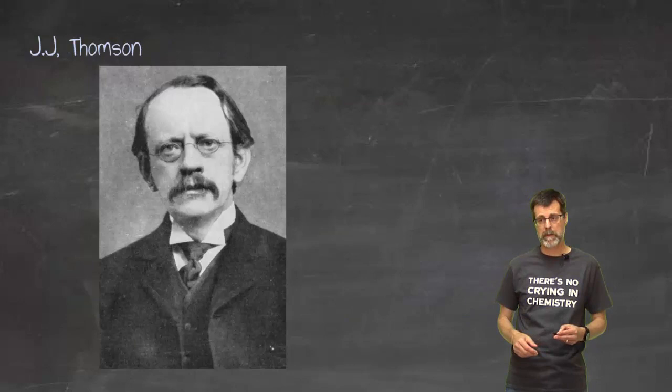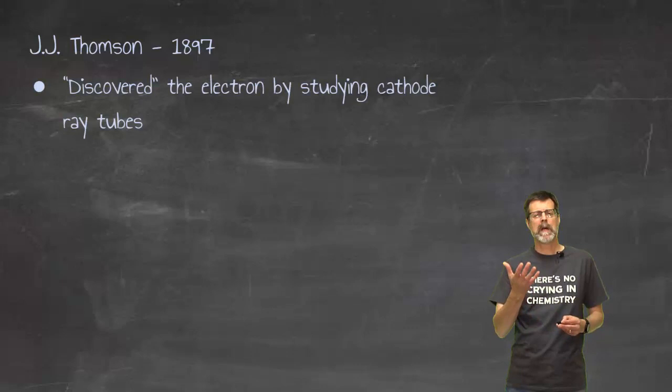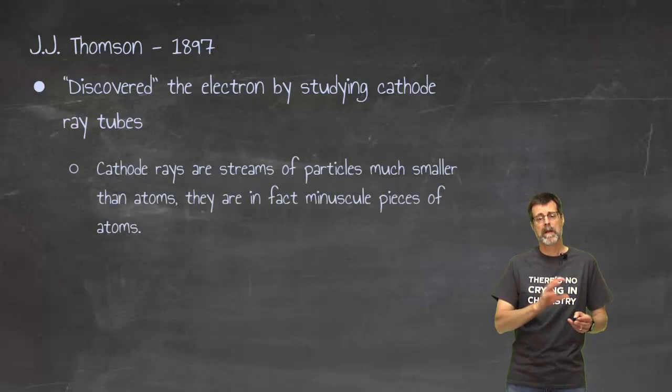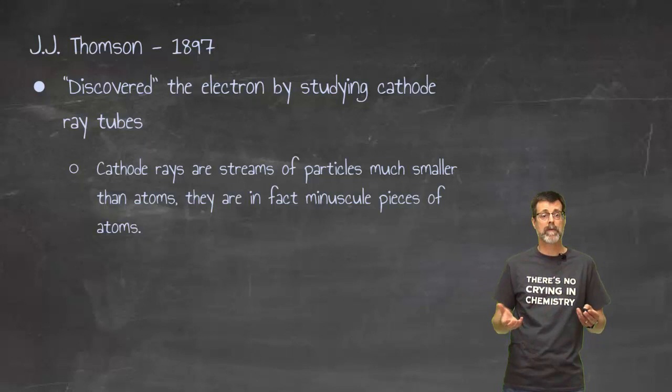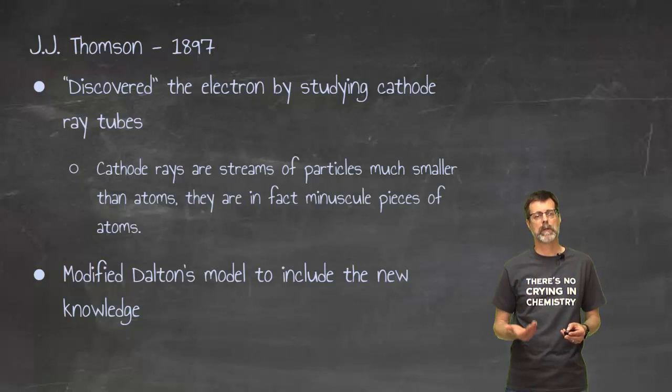Thompson took up that work and what he did was he explained it by saying the atom has electrons. Electrons then made up these cathode rays in the Crookes tube - they were streams of electrons. And if these electrons, where did they come from? They came from the atom.